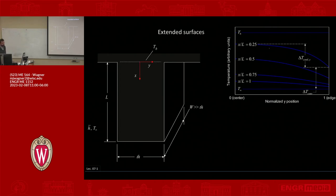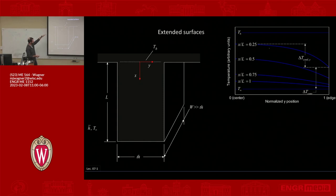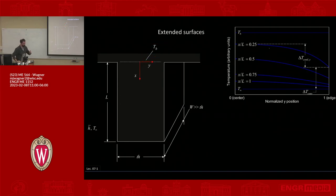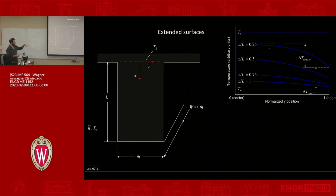An extended surface is a specific thing — logically, it's some kind of device or surface projecting out from a base where you know the temperature. In this example, T_B is specified; we know the temperature of some body. The reason we're moving from 1D steady-state with generation to this is that modeling it as an extended surface keeps it a 1D problem.